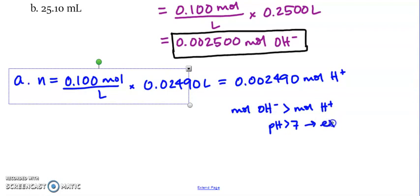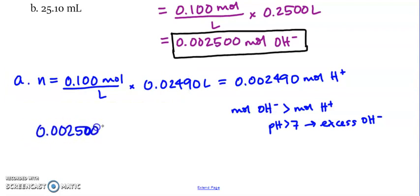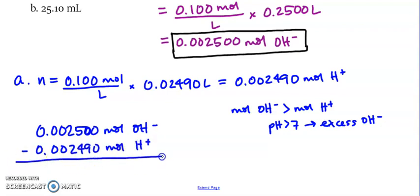That's due to excess OH minus. So we can find the pH based on how much excess OH minus. So now we're going to subtract. If I have 0.002500 moles of OH minus, minus 0.002490 moles of H plus, that gives me a difference of 0.000010 moles of OH minus excess.